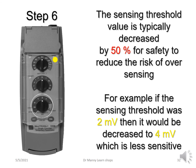In step six, the sensing threshold value is typically decreased by 50% for safety to reduce the risk of over-sensing. Remember, the pacemaker is just a machine and depends on you to set it correctly. For example, if the sensing threshold was two millivolts, it would be decreased to four millivolts — the figure increases but you are actually decreasing sensitivity. Two millivolts is more sensitive than four millivolts; it has been adjusted to four millivolts, which is less sensitive, to prevent over-sensing.